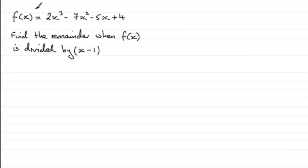Now, for this first part, we're given that f(x) equals 2x³ - 7x² - 5x + 4, and asked to find the remainder when f(x) is divided by x - 1.